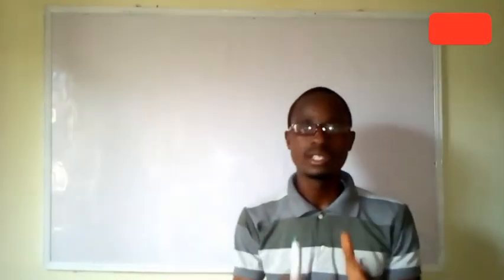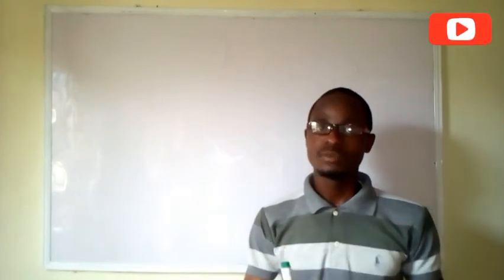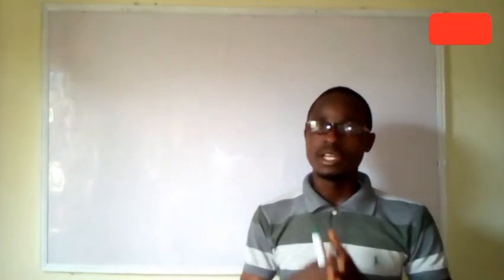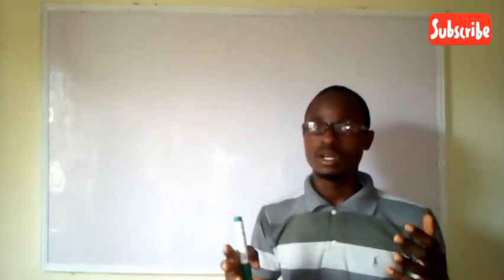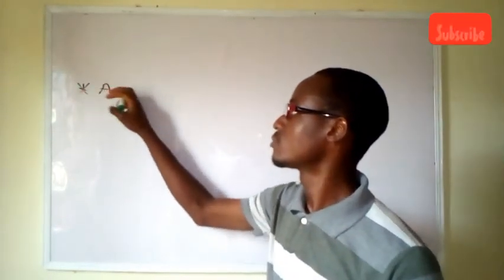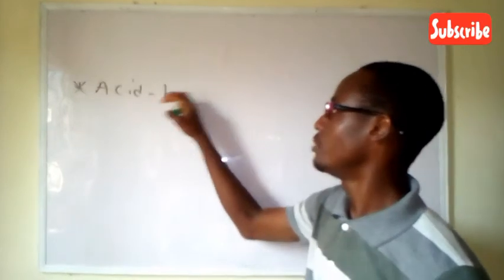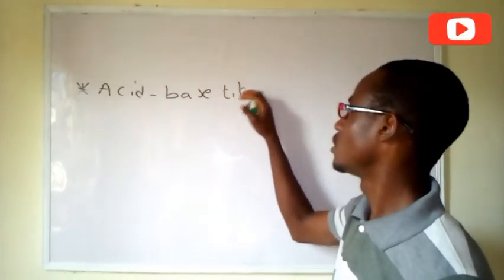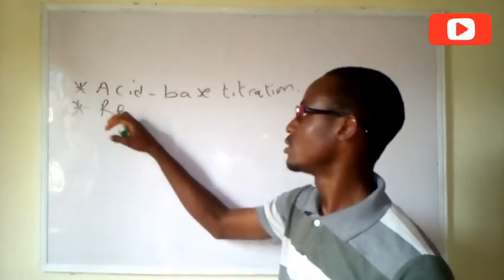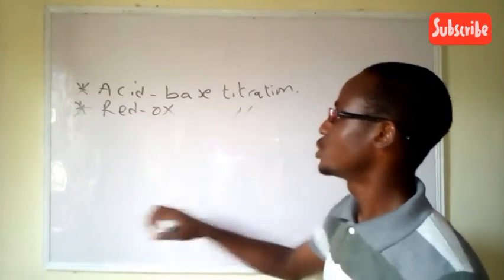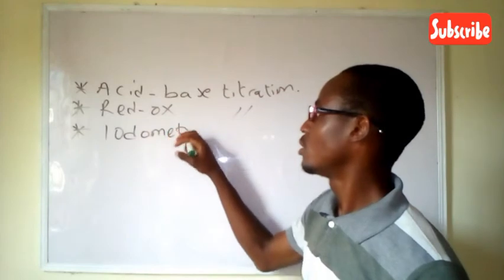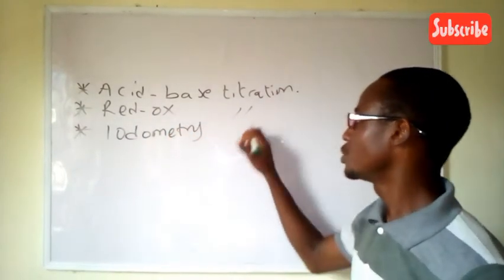There are some key words or terms you need to understand when it comes to preparation of laboratory reagents. Most importantly, the titration. We have different types of titration: we have the acid-base titration, then we have the redox titration, then we have the iodometry titration, and many more.